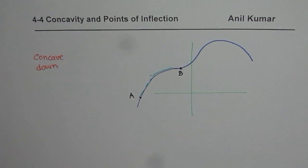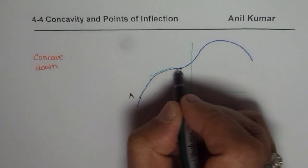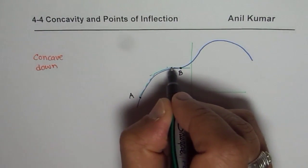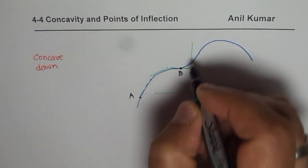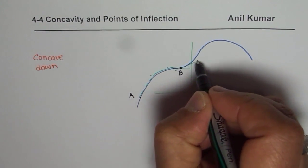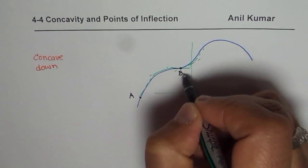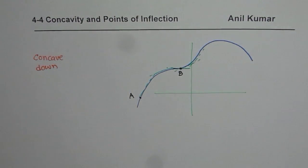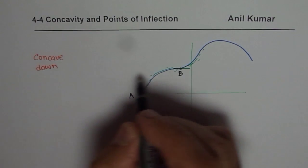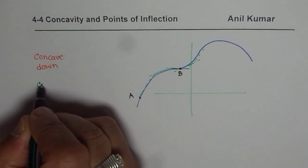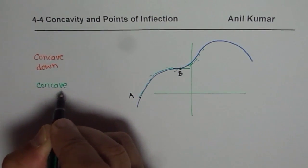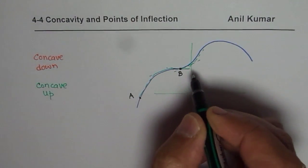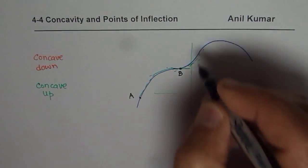But as soon as I reach the point beyond B, at B the tangent is kind of zero. After B, my tangent line is under the graph — the graph is over the tangent line. So what we notice is that it is concave up from B to C.